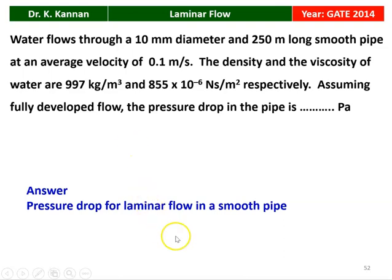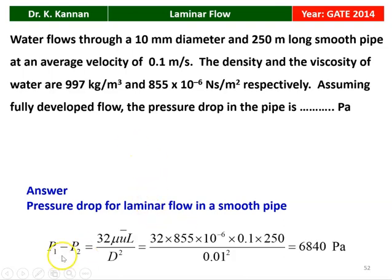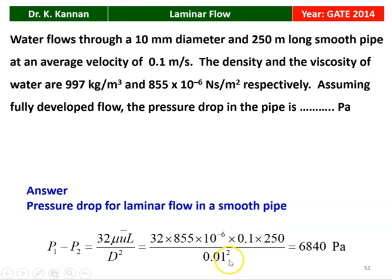The pressure drop for laminar flow in a smooth pipe is given by P1 minus P2 equal to 32 μ U-bar L divided by D square. So μ is the viscosity, U-bar is the average velocity, L is the length, and D is the diameter. Substituting: 32 × 855 × 10⁻⁶ × 0.1 × 250 divided by 0.01 square equals 6840 Pascal. So the pressure drop equals 6840 Pascal.